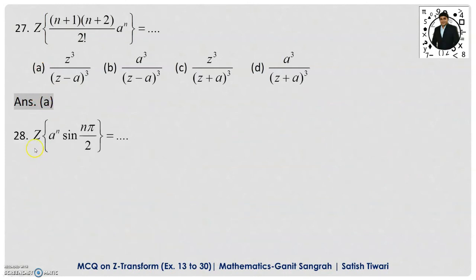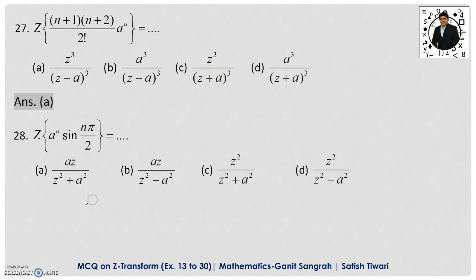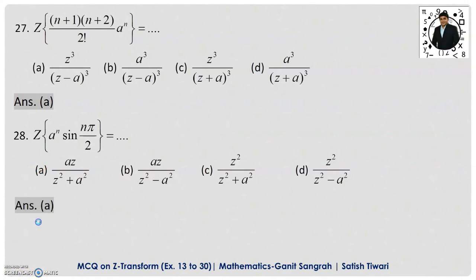Example 28: Z-transform of aⁿ·sin(nπ/2). Apply the damping rule to the Z-transform of sin(nπ/2) = z/(z²+1). Replace z with z/a: numerator becomes z/a, denominator becomes (z/a)²+1 = (z²+a²)/a². After simplification: az/(z²+a²). Option A is correct.